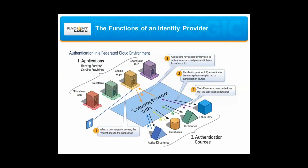By cloud deployment, the role of an identity provider is to authenticate and authorize users of remote applications using the available identity data. When a user requests access, the request goes to the application, which then relies on an identity provider to authenticate users and provide the attributes needed for authorization. The IDP authenticates the user against a broad mix of authentication sources, since data about users is so often scattered across lots of different sources. The IDP then creates a token in the form the application understands and passes it back.